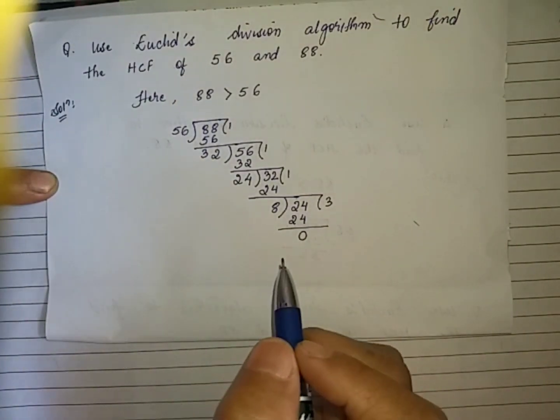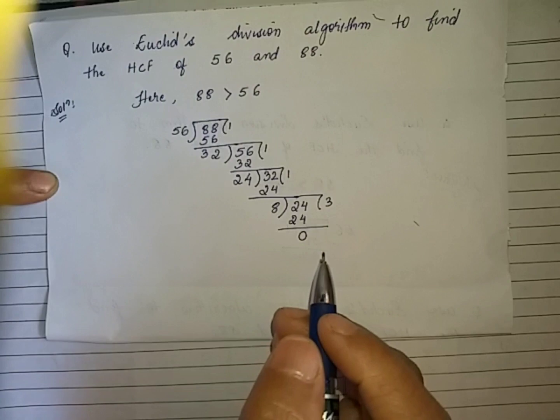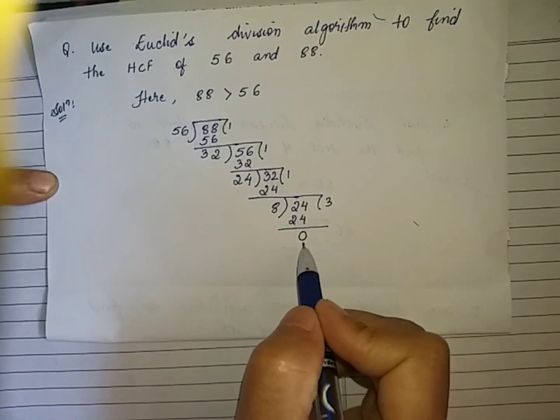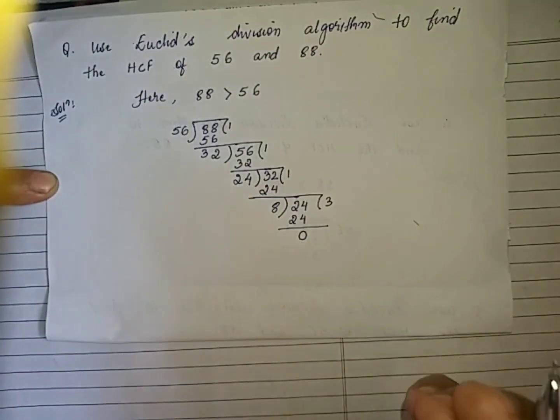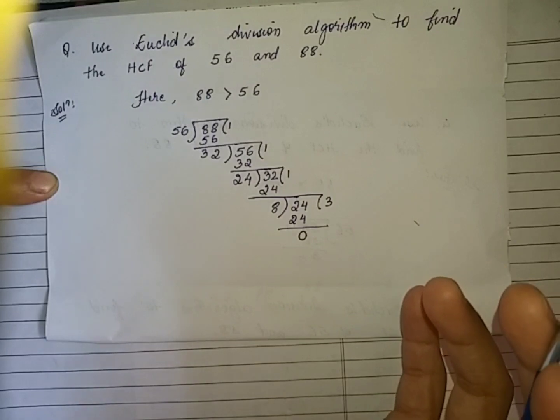Remember, at this stage we end the process when we get the remainder equal to 0. And what will be the required HCF?